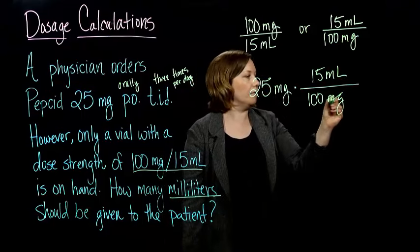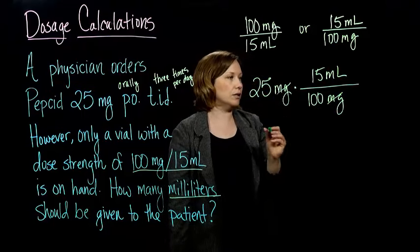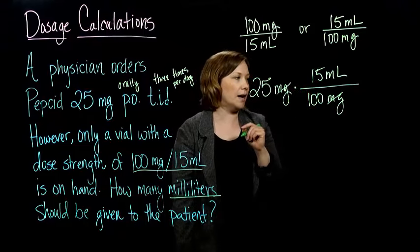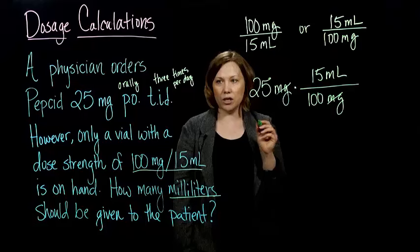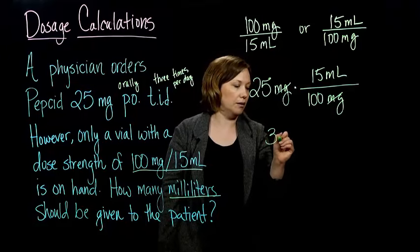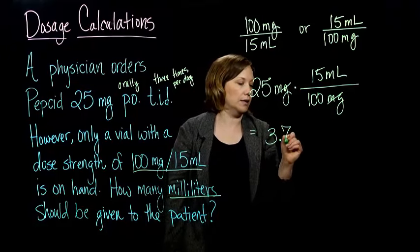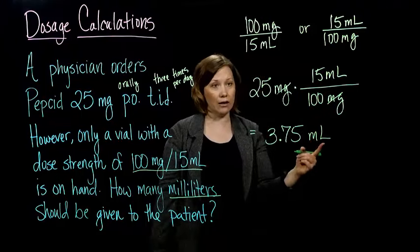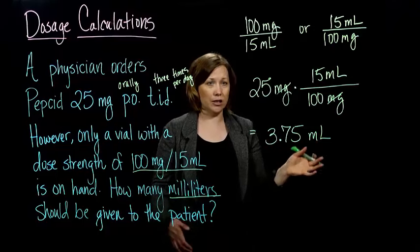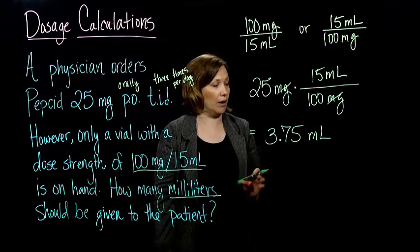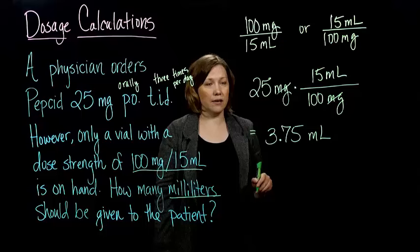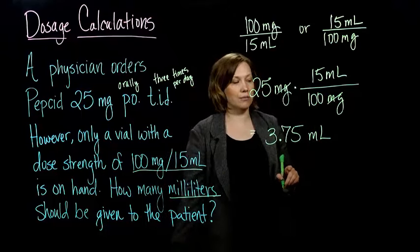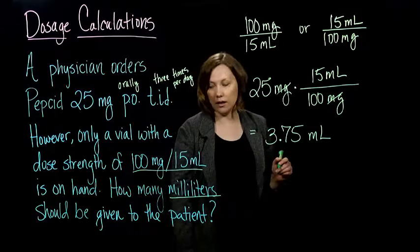All right, and sure enough, these guys cancel out, and so I have 25 times 15 divide by 100, which ends up 3.75, and the milligrams canceled, and all I'm left with is milliliters. I know I did it right because I've got just the milliliters left, which is what I wanted. So I need 3.75 milliliters of my 100 milligram per 15 milliliter solution.